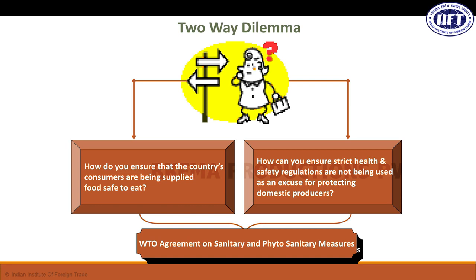Another concern is whether there is a difference in standards between your exported product and local companies in the importing country. For example, if you are a groundnut supplier to the US, domestic US groundnut companies may also operate there. Under the National Treatment Clause of the WTO, no country can have two different regulations — one for local market products and another for the same imported product. If your product gets detained at a foreign port, always check the law applicable to local companies under the National Treatment Clause.